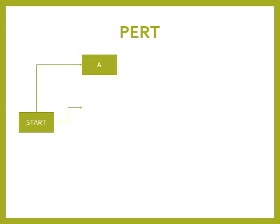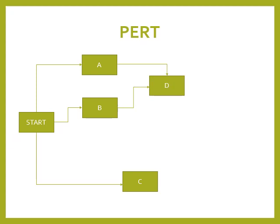We will look at the network diagram example. It shows a start node and an end node, with activities in between. This can be called a flow chart or a visual representation of the project. It helps understand how much time is needed for each activity and estimate the total project duration.